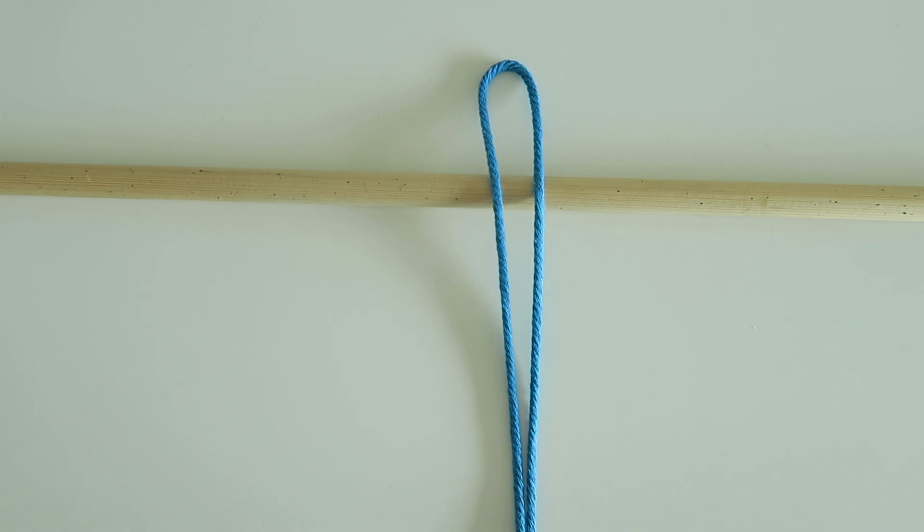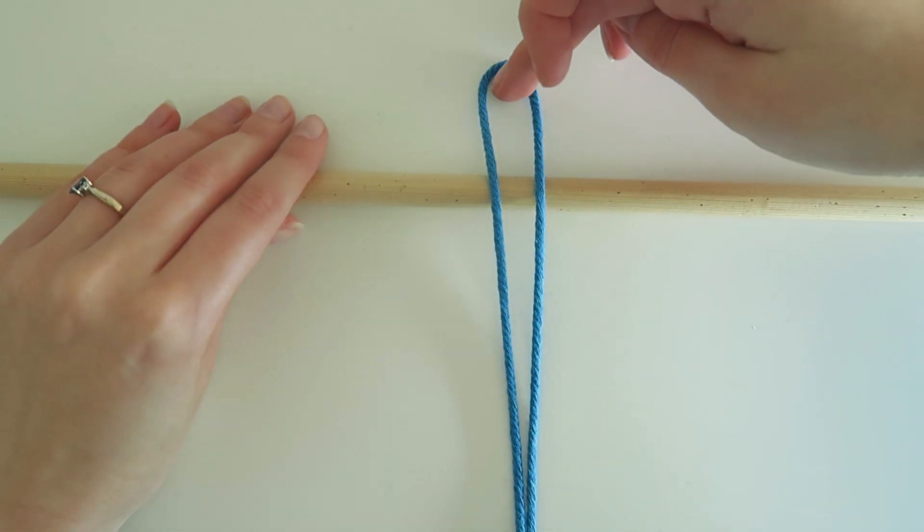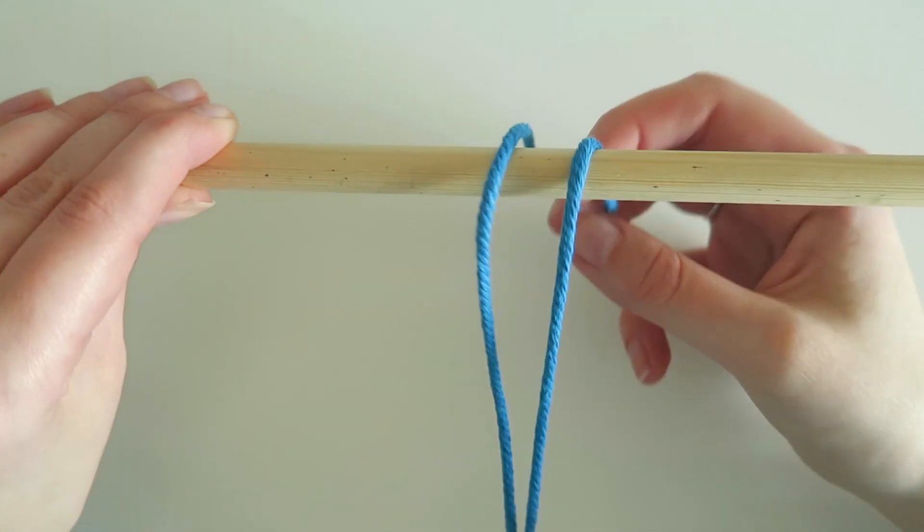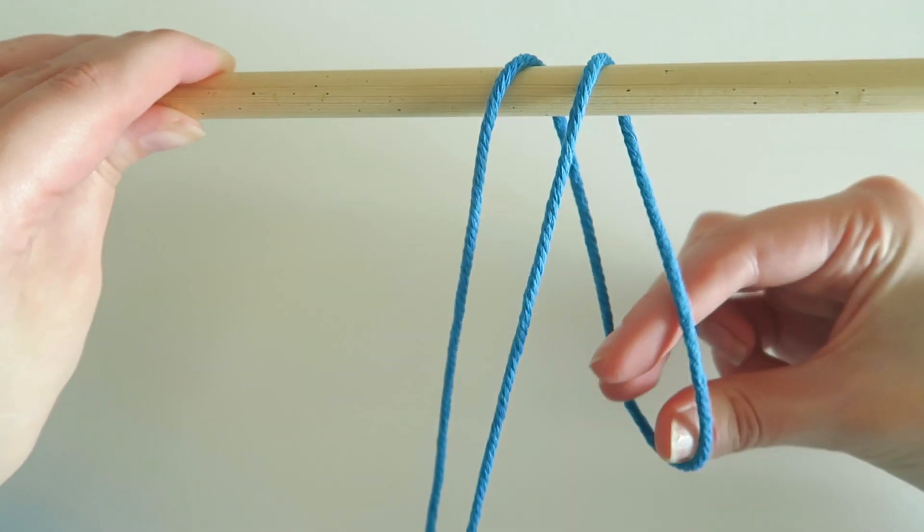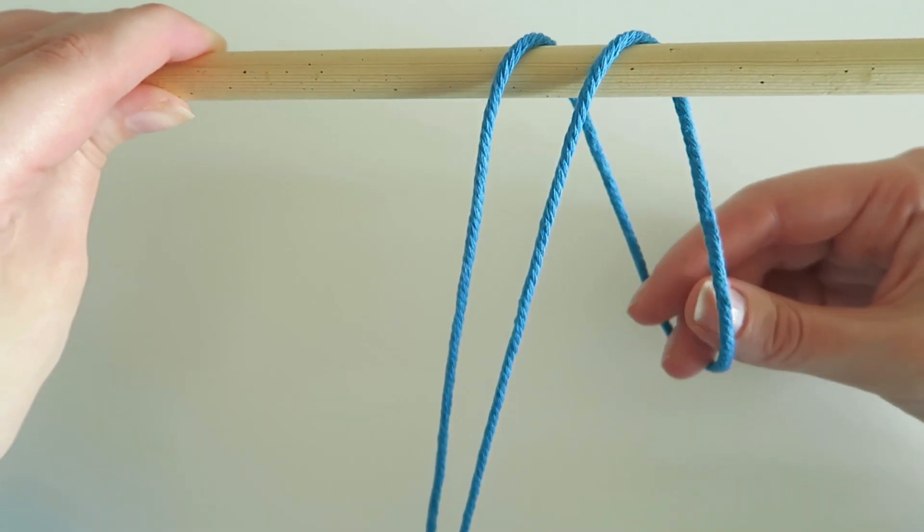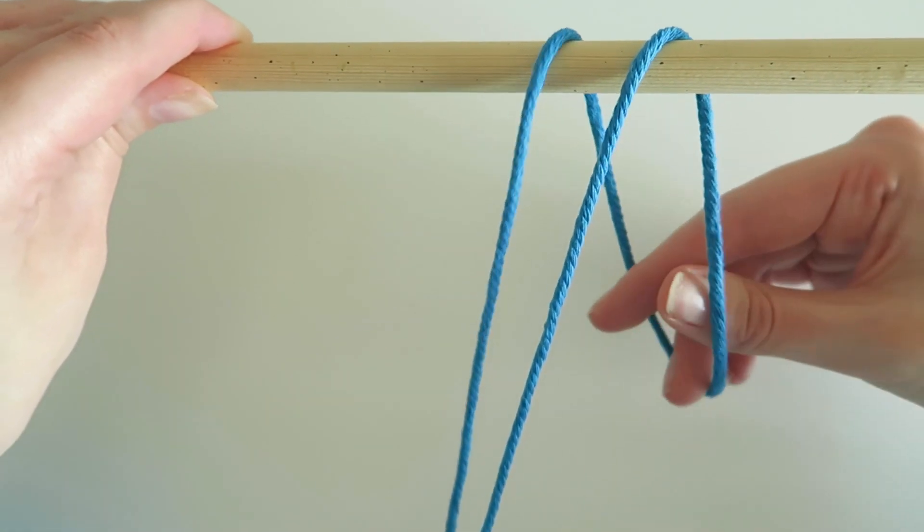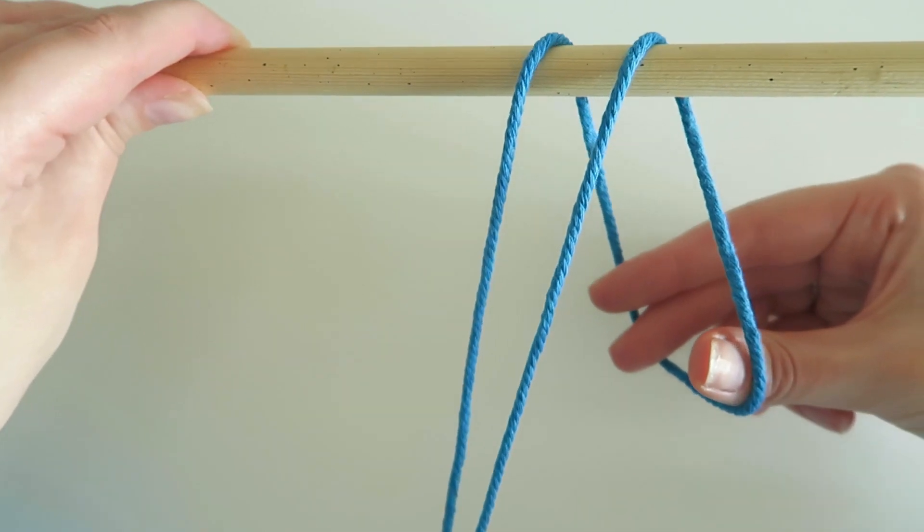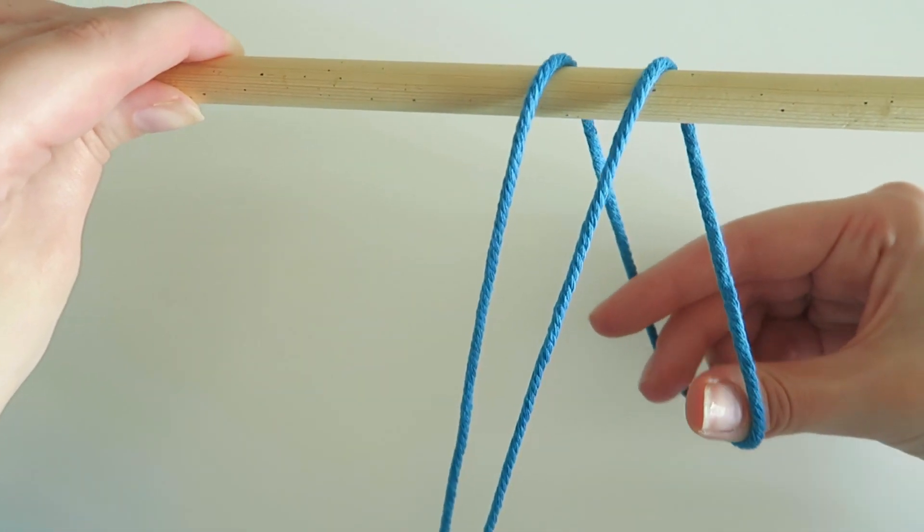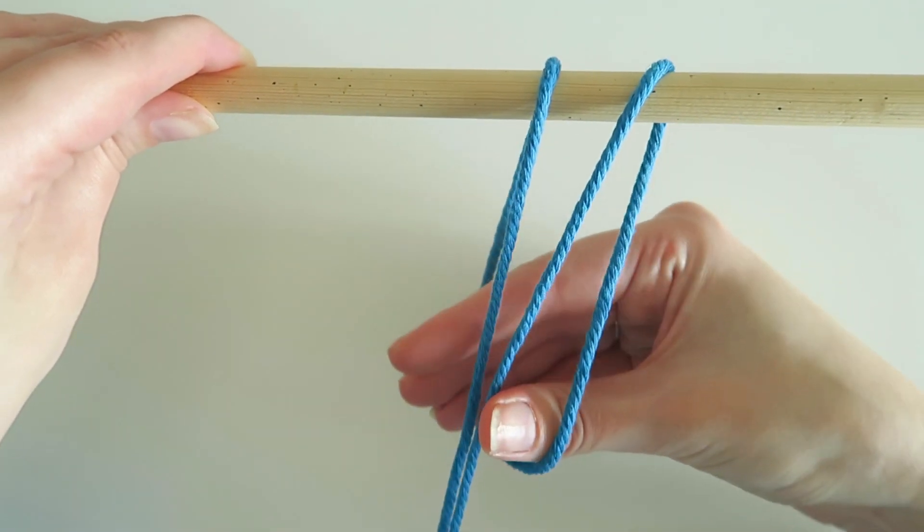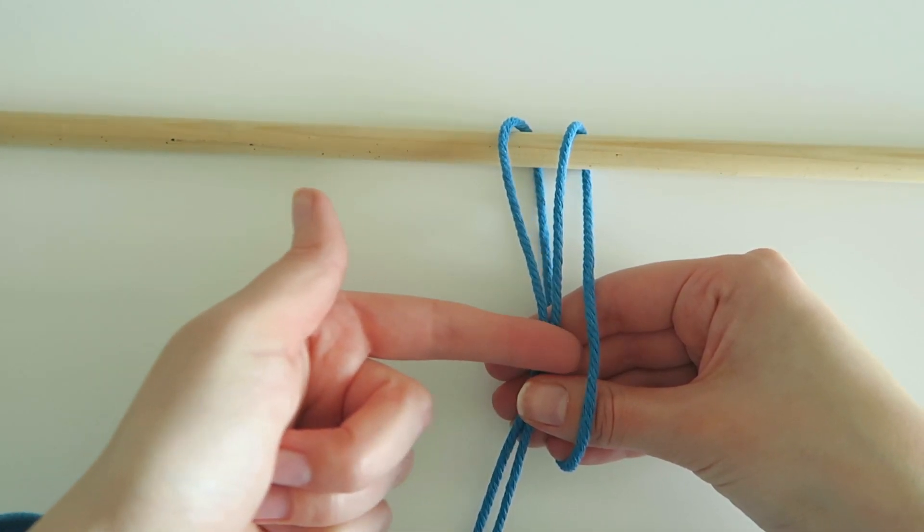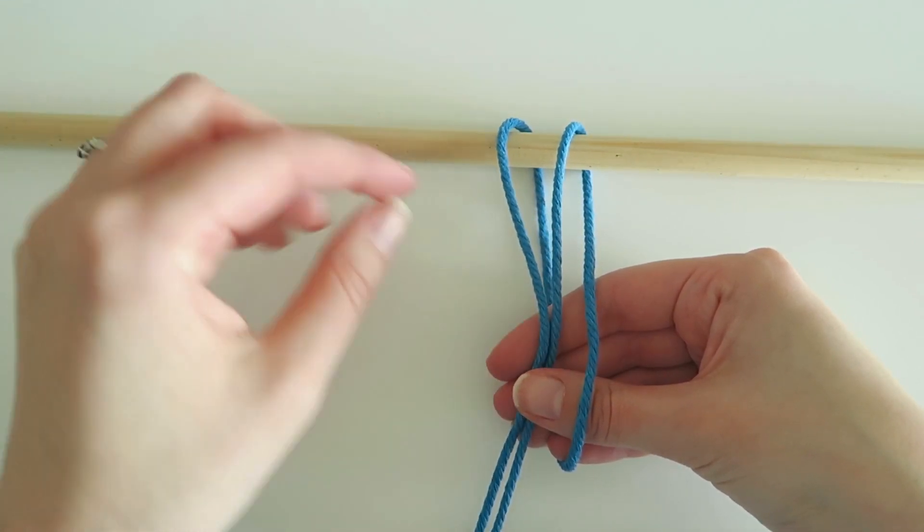We are then going to bring that folded bit behind the dowel and downwards. I'm going to pop my fingers into that little gap that we've made there with the strings so that my fingers are ready to grab those two loose strings at the front. So I'm going to grab those two loose strings and push them or pull them through that gap there where my hand is.